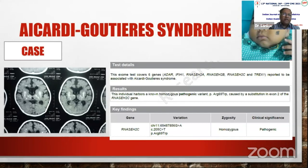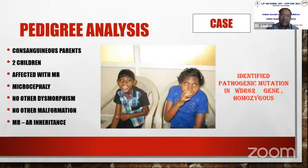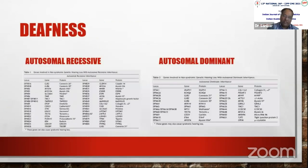Next-generation sequencing is an advanced platform for whole exome or whole genome sequencing. For example, in Aicardi-Goutières syndrome — where microcephaly and brain calcifications are present but it is not toxoplasmosis — five to seven genes are involved, so panel testing can identify and confirm the disease. Prenatal diagnosis has been done in subsequent pregnancies as it is autosomal recessive. In another case, two affected children with microcephaly and consanguineous parents led us to perform whole exome sequencing to identify the variant.